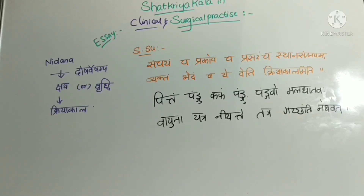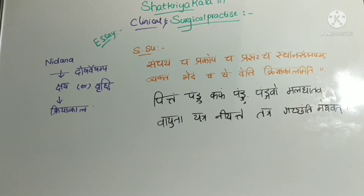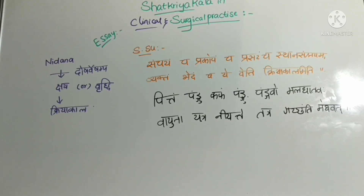The symptoms seen in Sanchayavastha: Sthabdha Purna Koshtata is Vata Sanchaya; Pitta Avagasata is Pitta Sanchaya showing mild discoloration; Mandoshmata and Manda Cheshta — that is slow movements — is Kapha Sanchaya. In Prakopavastha, aggravation of doshas is seen. For Vata Prakopa, Koshtha problems will be seen — Koshtha Todha and Sancharanata. For Pitta Prakopa: Amlika (sour taste), Pipasa (thirst), and Paridaha (burning sensation) are noticed.